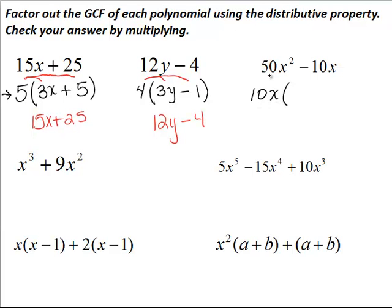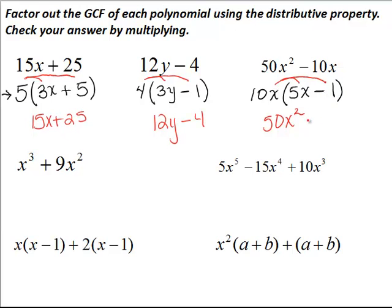I ask myself: 10x times what gives me 50x squared? Well, 10 times 5 gives me 50, and x times x gives me x squared, so this must be 5x. Minus: 10x times what gives me 10x? That's just 1. So I've factored that. Distributing back to check: 10x times 5x is 50x squared, and 10x times negative 1 gives minus 10x — which is what I started with.